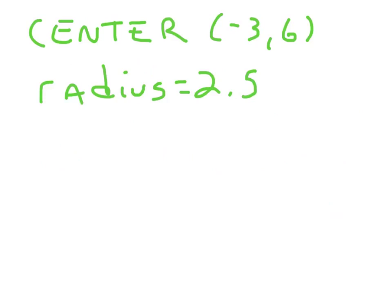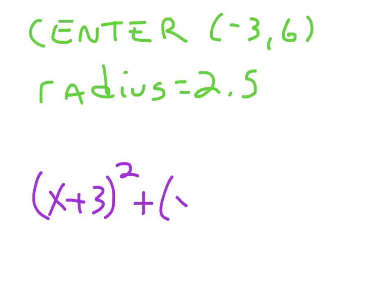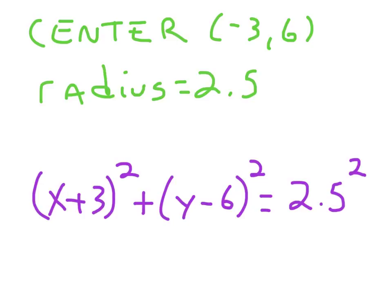We have another example. We have a center of negative 3 and 6. So: x — it says negative 3, so we go plus 3 — quantity squared, plus y — it says positive 6, so we go minus 6 — quantity squared. Then our radius is 2.5, so we write 2.5 squared. The equation is: x plus 3, quantity squared, plus y minus 6, quantity squared, equals 2.5 squared. It's fine to just write 2.5 squared, or you can go ahead and square it.